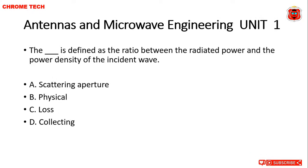Hello everyone, Antennas and Microwave Engineering MCQ. First question: the dash is defined as the ratio between the radiated power and the power density of the incident wave. Option A: scattering aperture. Option B: physical loss. The correct answer is option A — scattering aperture.